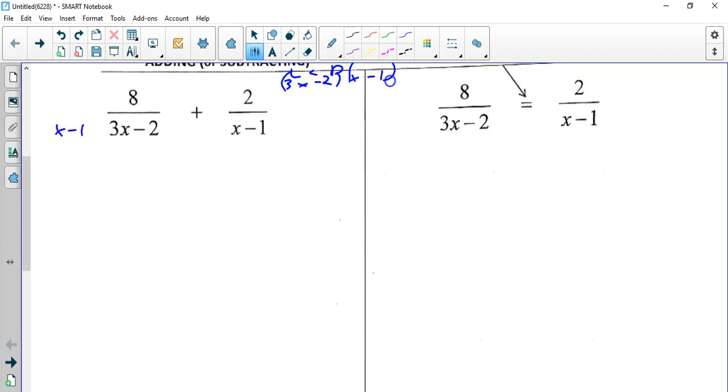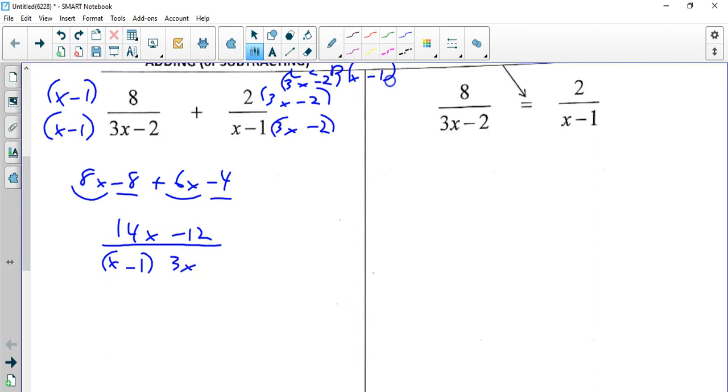So the 3x minus 2 needs the x minus 1 top and bottom, like we've been doing. The second term just needs the 3x minus 2 top and bottom. And then all you do now is distribute: 8x minus 8 plus 6x minus 4. If you want to write the denominator right now over 3x minus 2 times x minus 1 you can. I prefer just to simplify first my top instead of rewriting it all. So that's 14x minus 12 over x minus 1, 3x minus 2. And that's our answer.